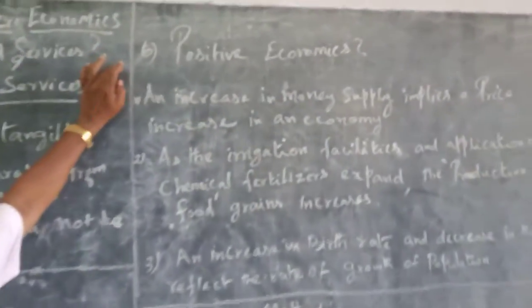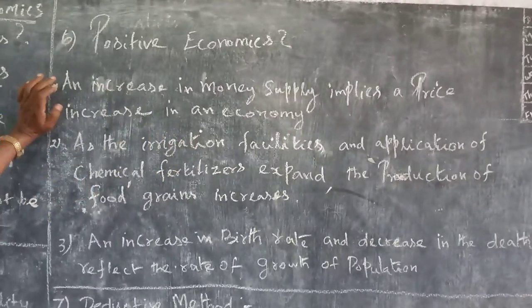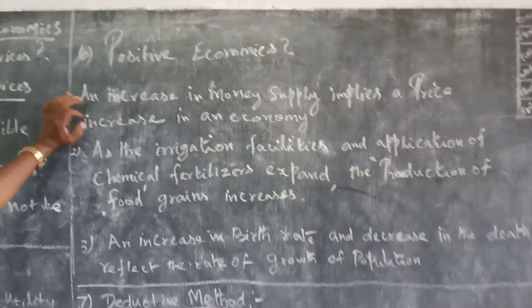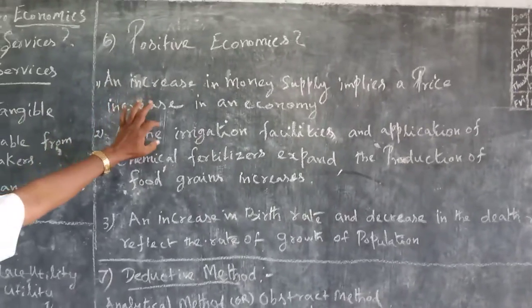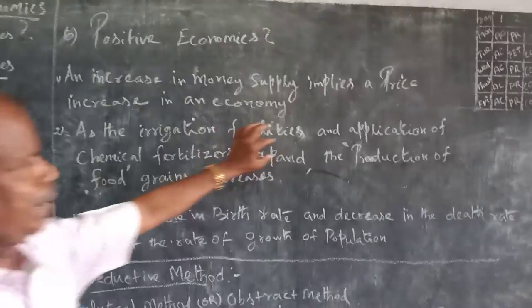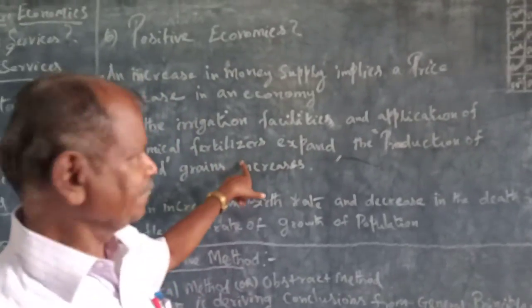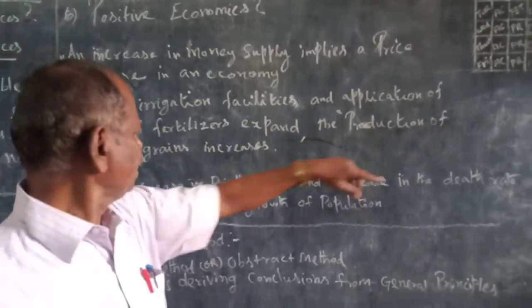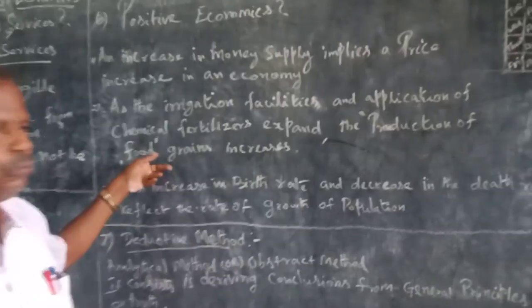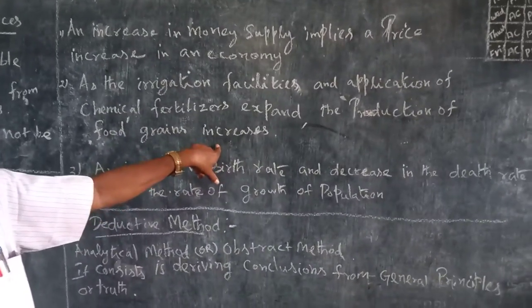Positive economics: an increase in money supply implies a price increase in the economy. As irrigation facilities and application of chemical fertilizers expand, the production of food grains increases.